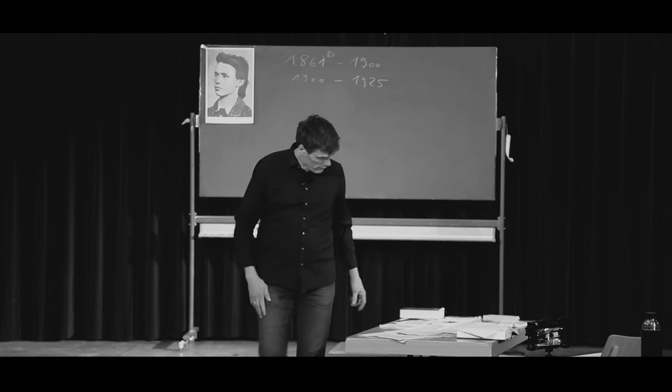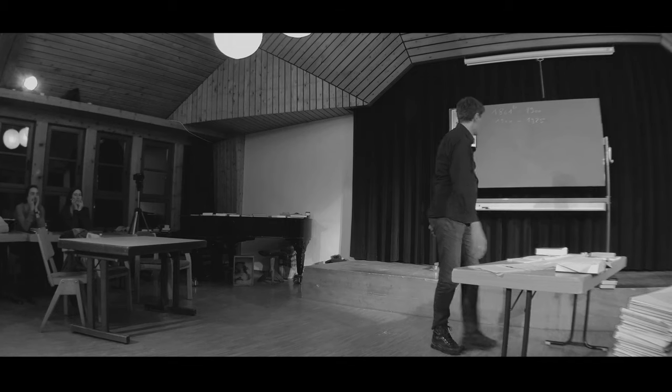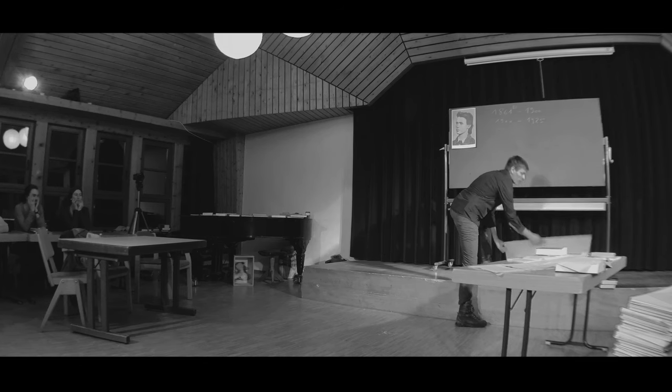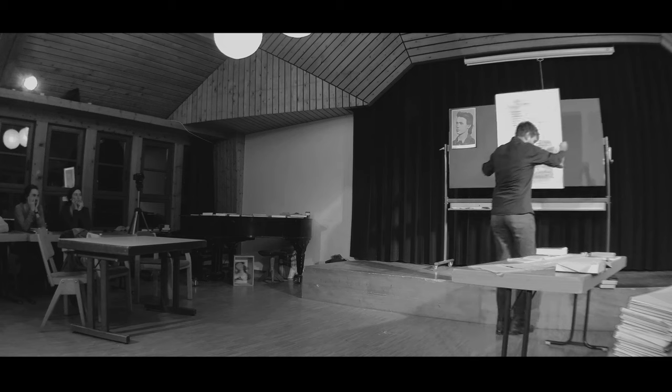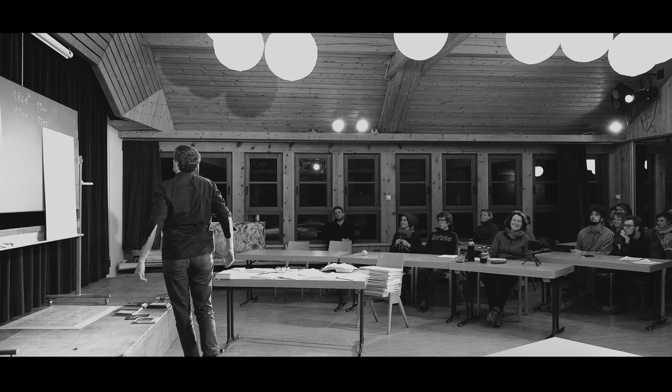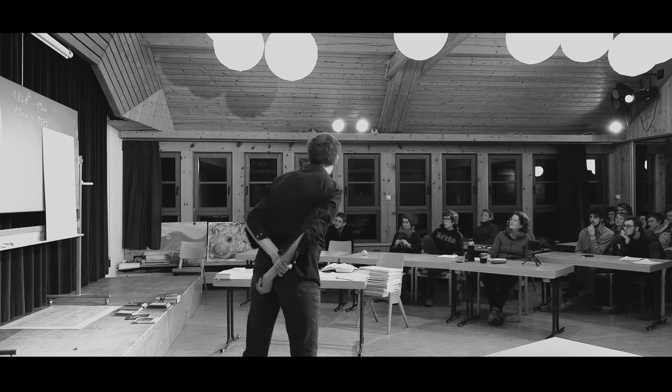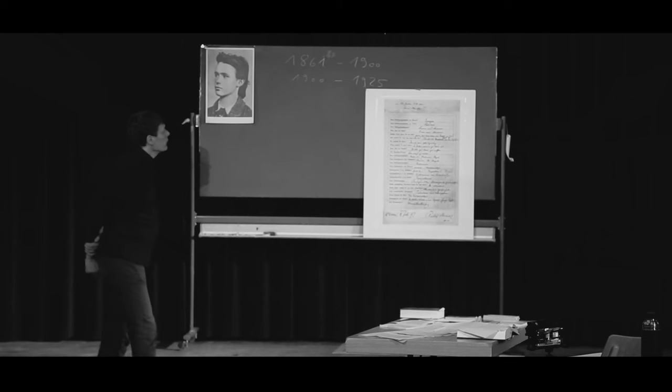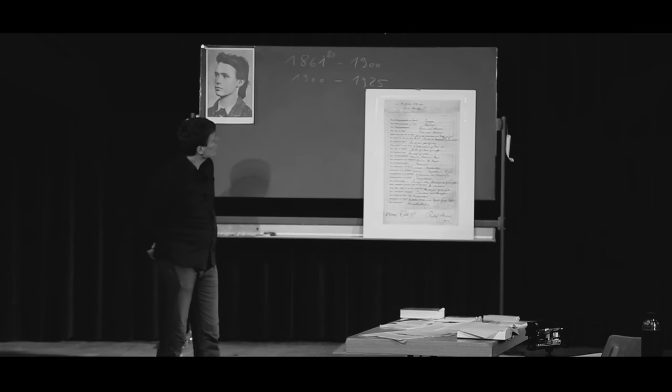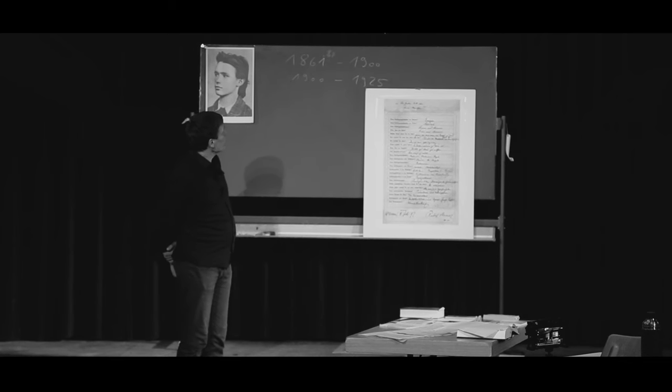Jetzt wollte ich euch zeigen - das war alles sehr ernst, was ich erzählt habe, und so ernst ist Steiner nicht. Das ist so schwierig, den Humor zu fassen, vielleicht gelingt mir das hiermit. Ein Fragebogen, den er ausfüllt 1892 in der Weimarer Zeit. Das war damals so ein Spiel. Da konnte man oben ein Motto schreiben, und da schreibt er: 'An Gottes Stelle der freie Mensch!!!' Das ist sein Motto.